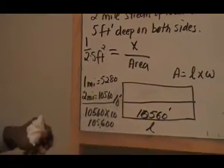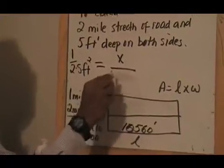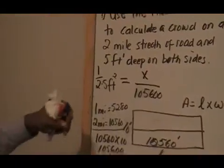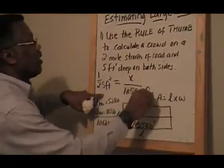Now, since I have that area, I can come and replace this area with this right here. Now, see right at the back. All I have to do now is to cross multiply. This is feet squared also.